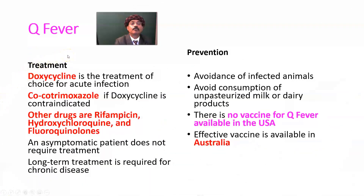For treatment, the treatment of choice is the tetracycline class, specifically doxycycline. Some persons cannot take doxycycline due to pregnancy or age younger than 8 years. In that situation, the alternate drug is co-trimoxazole. However, co-trimoxazole is also contraindicated in the first trimester of pregnancy, so other drugs like rifampicin may be used.